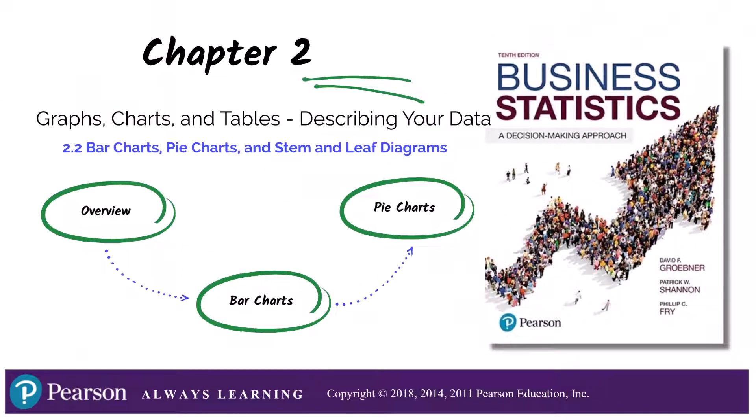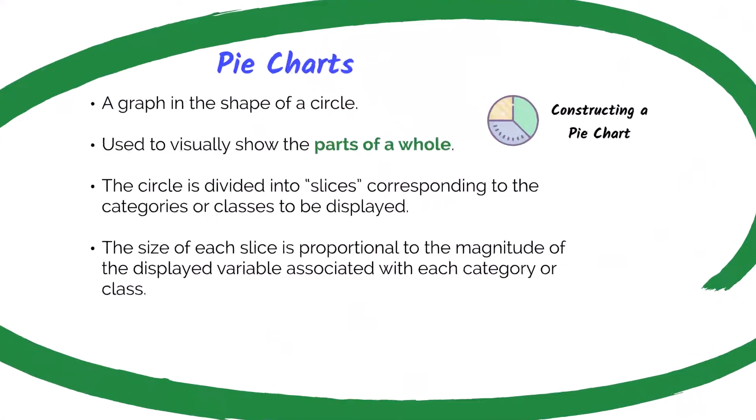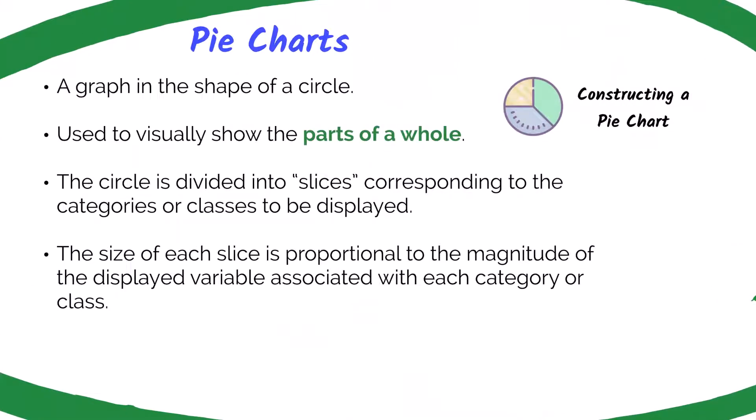Next, let's finish up and talk about pie charts. Pie charts are typically used to show the parts of a whole — think of the circle as being divided into slices. Each slice represents a category or class that is displayed. The size of each slice is proportional to the magnitude of the displayed variable for each category or class.